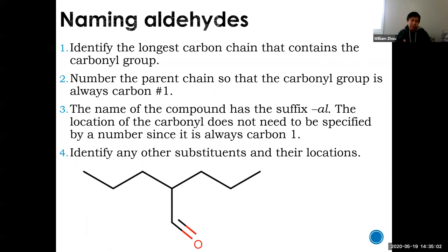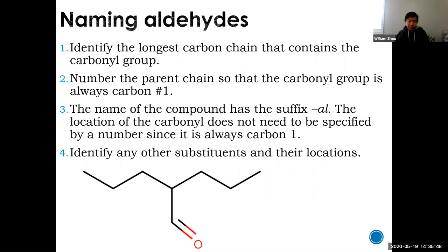To name aldehydes, identify the longest chain first, and this chain must contain the carbonyl group. Number the chain so that the carbonyl is always carbon one — there's no ambiguity, it has to be carbon one. Because the carbonyl must be on a terminal carbon, it's either the first or last carbon, and as a functional group it gets highest priority. The name of the compound must end with -AL for aldehyde, and you don't need to state where the carbonyl is because it's implied to be carbon one.